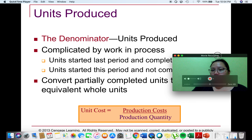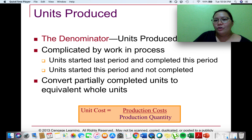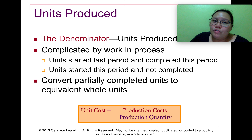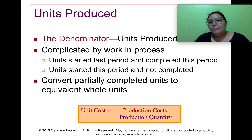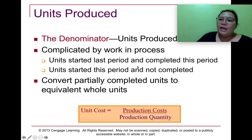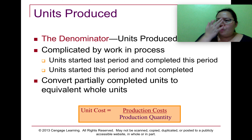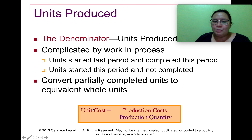For our denominator, we use the number of units produced. The computation of the number of units produced in process costing is a little bit complicated because we have work in process beginning as well as work in process ending. Work in process is defined as goods we have already started but not yet finished. The beginning work in process are units started last period and completed in the current period. The ending work in process are units started this period and not completed as of the end of the period. What we do is convert partially completed units to equivalent whole units.